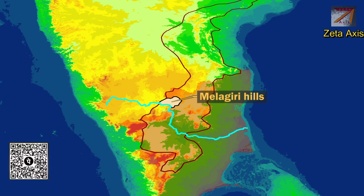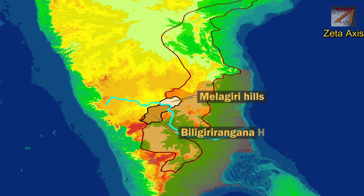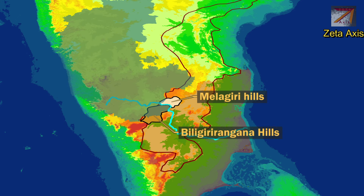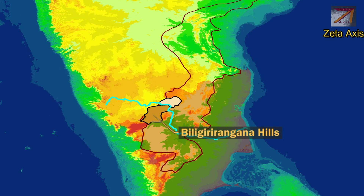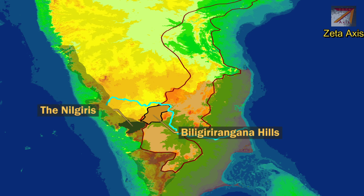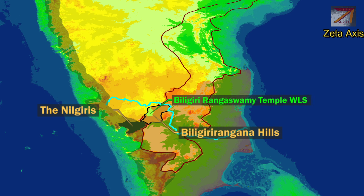The next important mountain range of the Eastern Ghats is the Biligiriranga hills, located in south-western Karnataka and Erode district of Tamil Nadu. It is in the Biligiriranga hills that the Eastern Ghats join the Nilgiri hills of the Western Ghats. The Biligiriranga hills are the tallest hill range in the Eastern Ghats, with many peaks above 1500 meters in height. The area has been declared a Biligiriranga Swamy Temple Wildlife Sanctuary, also called BRT Wildlife Sanctuary, and is also a Tiger Reserve. The Biligiriranga hills show fauna and flora of both Eastern Ghats and Western Ghats.